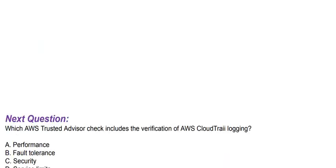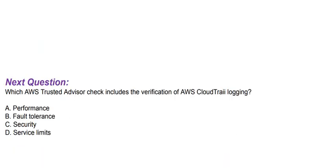Next question: Which AWS Trusted Advisor check includes the verification of AWS CloudTrail logging? Option A: Performance. Option B: Fault Tolerance. Option C: Security. Option D: Service Limits.